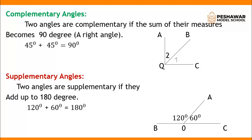90 degrees means a right angle. For example, 45 degrees plus 45 degrees is equal to 90 degrees. Whenever the sum of two angles equals 90 degrees, they are known as complementary angles.